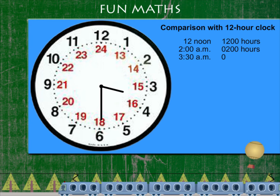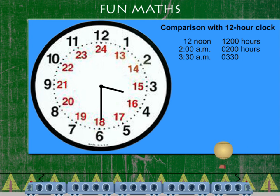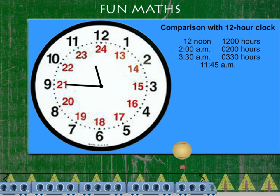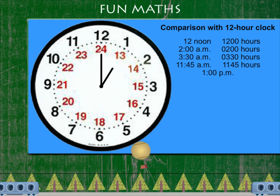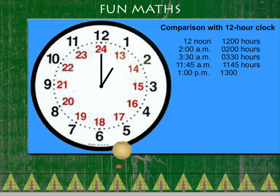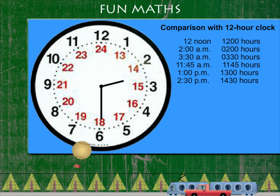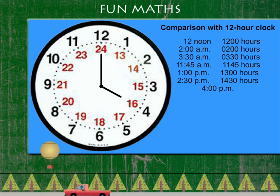At 11:45 a.m., it becomes 1145 hours. 1 p.m. becomes 1300 hours. 2:30 p.m. is called 1430 hours.